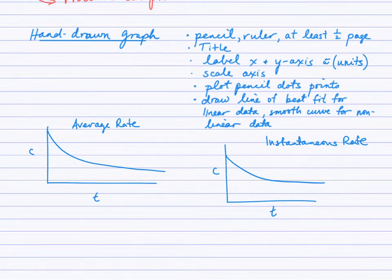For the graphing exercise that you'll be doing in class, be sure to use a pencil and a ruler. You want your graph as large as possible. I will have graph paper for you. You want to be at least half a page. There should be a title. Typically for your title, a graph of Y versus X works well, where Y and X would be substituted with the names of those quantities on those axes. Label your axes with units in round brackets. Scale the axes properly. X and Y don't have to have the same scale, but it does need to be consistent. Plot with pencil dot points, not large circles, but dots. Then draw a line of best fit for linear data and a smooth curve for nonlinear data.